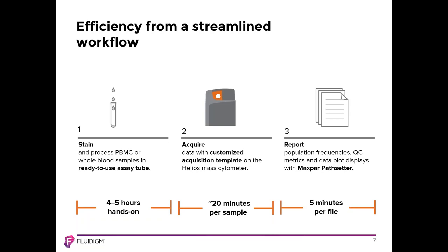The Maxpar Direct Immune Profiling Assay with Maxpar Pathsetter software provides efficiency from a streamlined workflow. In the first step, PBMC or whole blood samples are stained in a ready-to-use assay tube. In the second step, data is acquired with a customized acquisition template on the Helios mass cytometer. In the third and final step, population frequencies, data plots, and QC metrics are reported with Maxpar Pathsetter software.